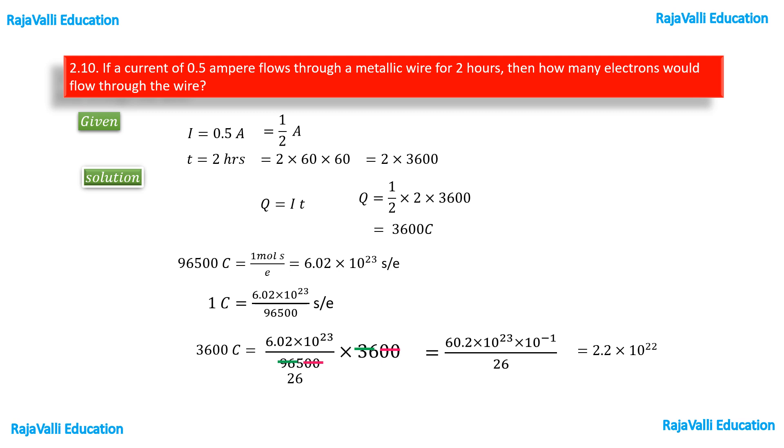Now canceling these values will get 2.2 times 10 to the power of 22. So 2.2 times 10 to the power of 22 electrons are flowing through the wire during this condition. That is a current of 0.5 ampere for 2 hours. So 2.2 times 10 to the power of 22 electrons is the correct answer. Thank you.